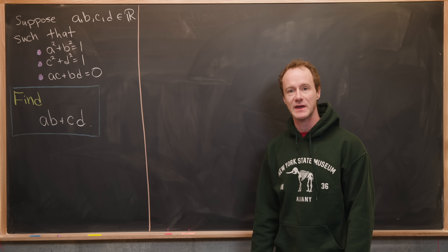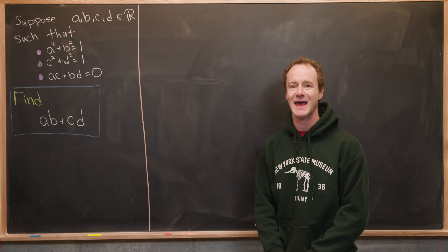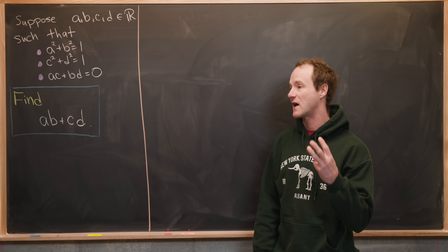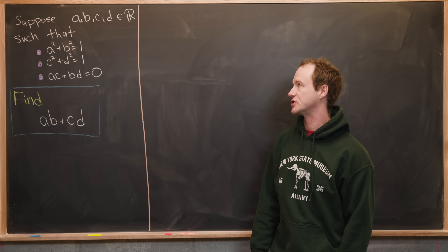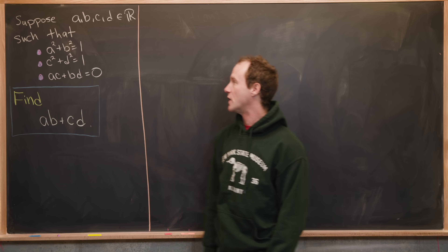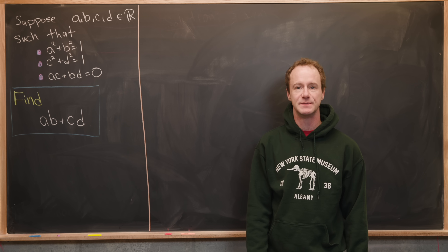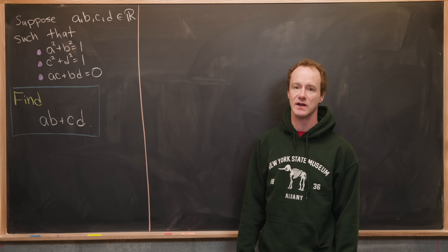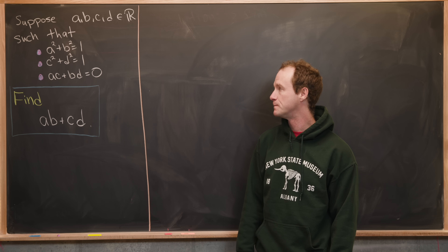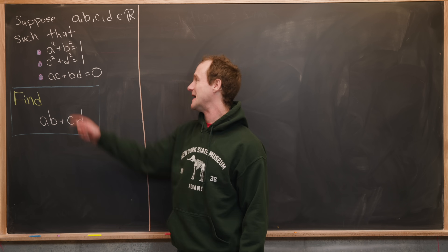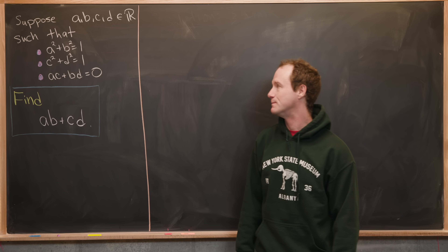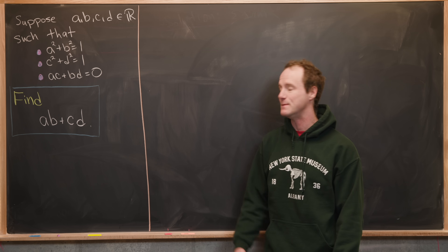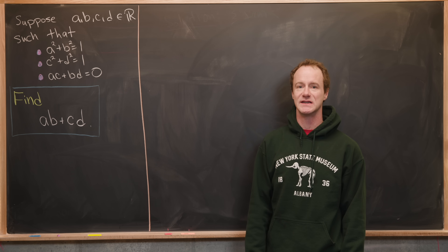We suppose that we have real numbers a, b, c, and d satisfying three conditions. First, a squared plus b squared equals one, and c squared plus d squared equals one. Also, ac plus bd is equal to zero. Our goal is to find ab plus cd.